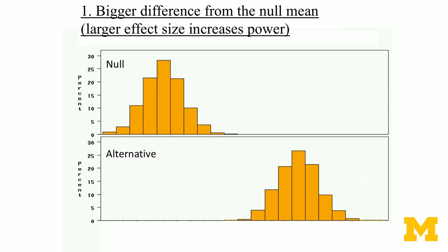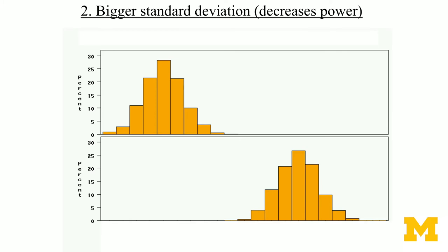What is the effect size? In these two distributions — a null distribution on the upper panel and an alternative distribution on the lower panel — a larger effect size means the difference between the means of the two distributions is larger. When it's larger, the overlap is smaller, which means more statistical power. If the alternative is moved further away from the null, that increases your power.